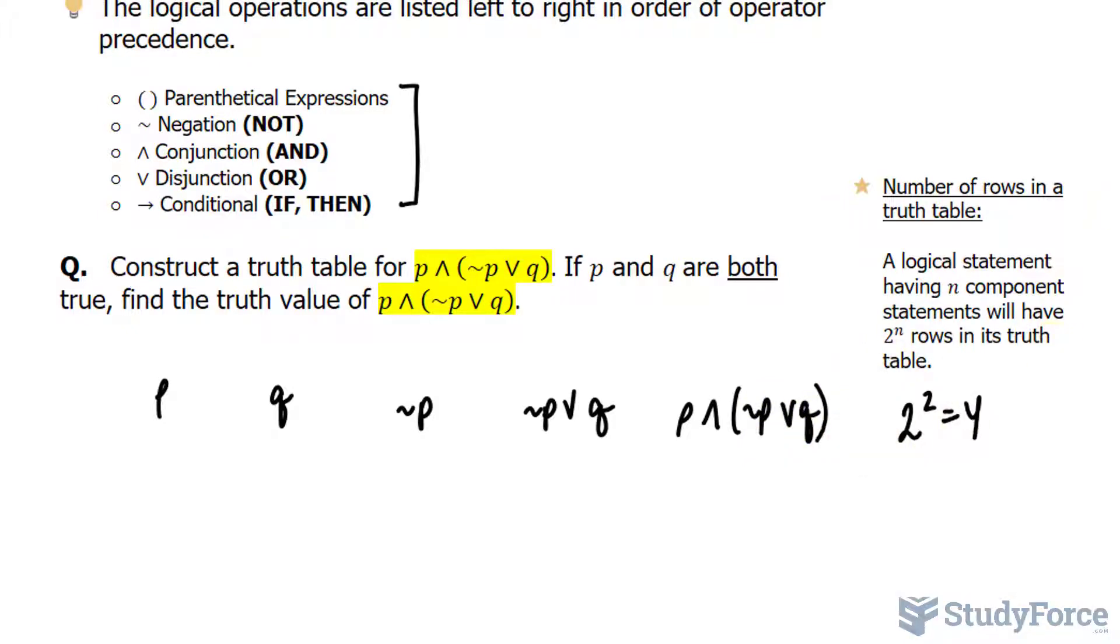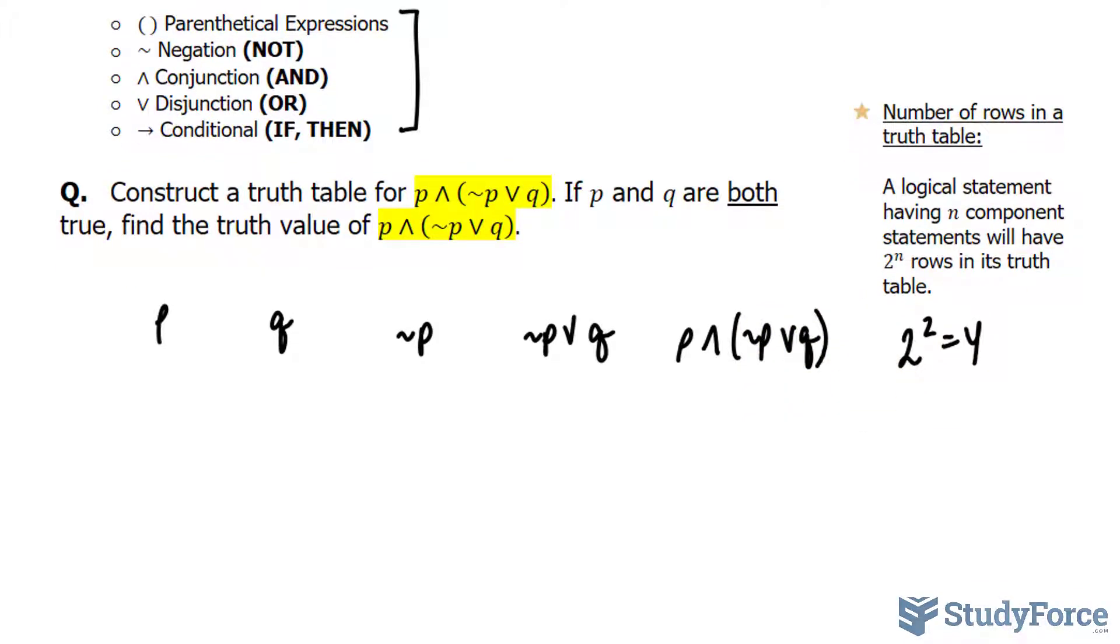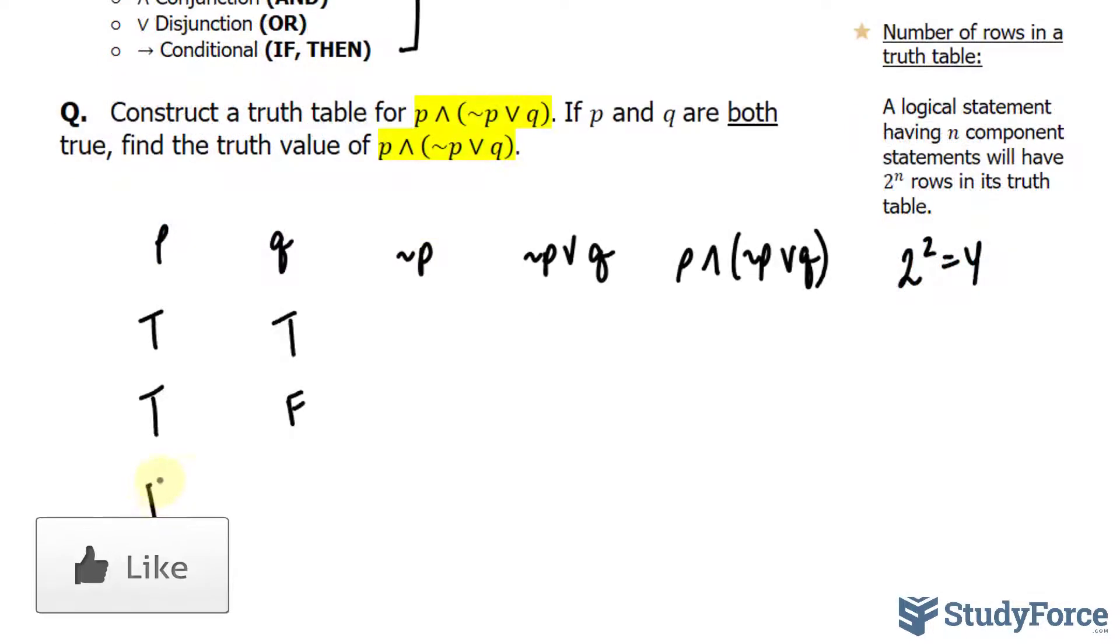The reason this is important is they tell us the total number of combinations. One combination is that both are true. Another combination: this is true, that's false. The third combination is false and true. The order doesn't matter here. The last combination is false and false.